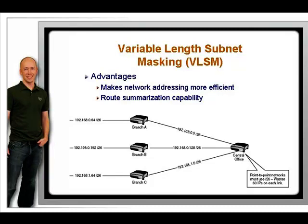The diagram shows several branch offices using subnetted Class C slash 26 addresses that provide each branch with 62 possible host IPs. The branches are connected to the central office via point-to-point WAN links. The ideal mask to use for such a link is slash 30 because it provides only two hosts, one for each end of the link.